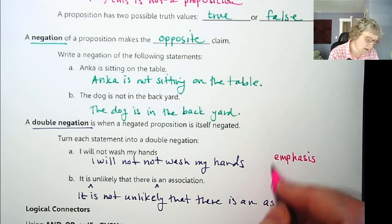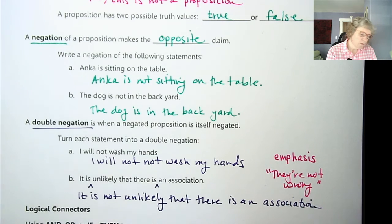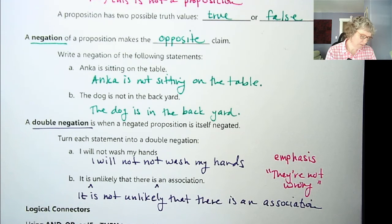Or for example, if someone says they're not wrong. We might say that because we're thinking, well, I don't agree with them completely. But they have a point. So they're not wrong. So sometimes a double negation does mean a slightly different thing than the same statement without any negation at all.